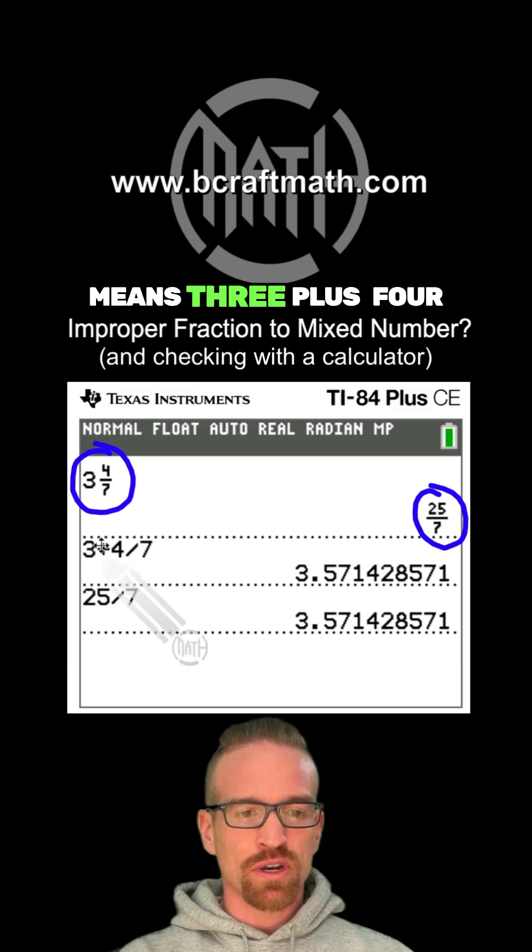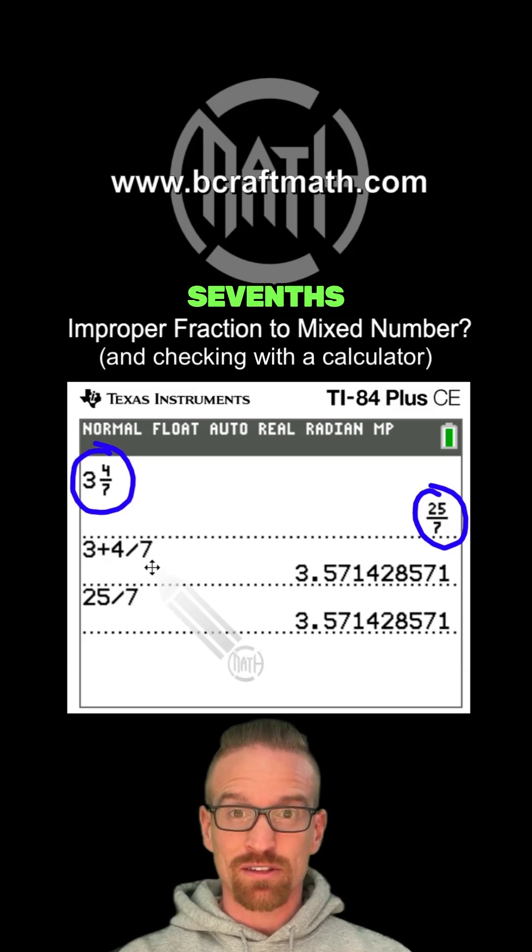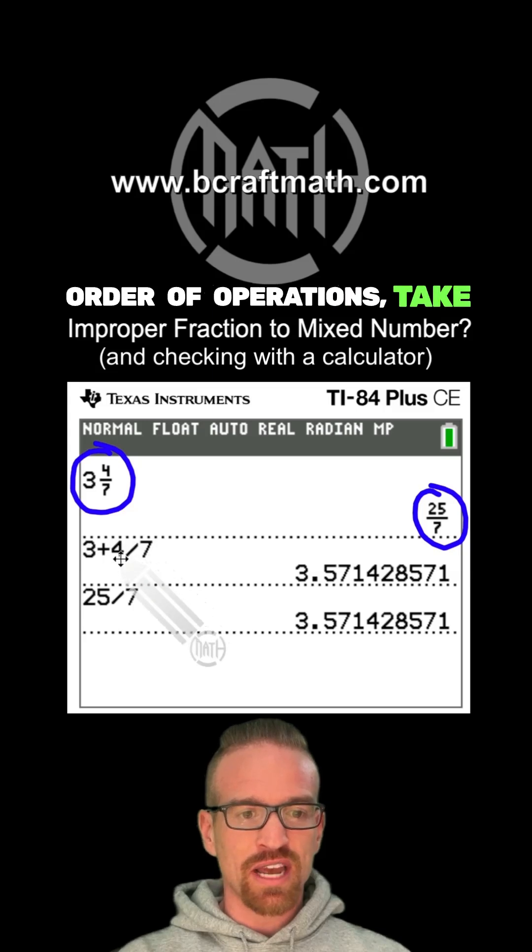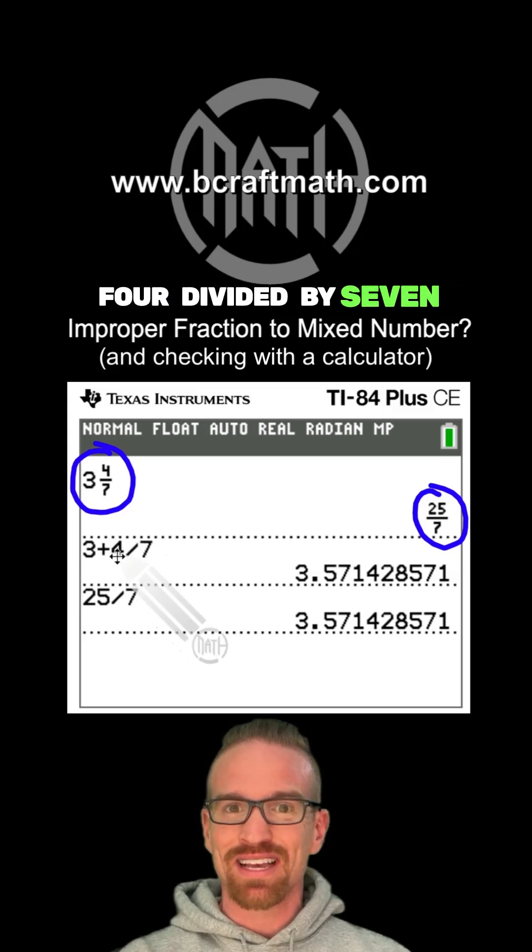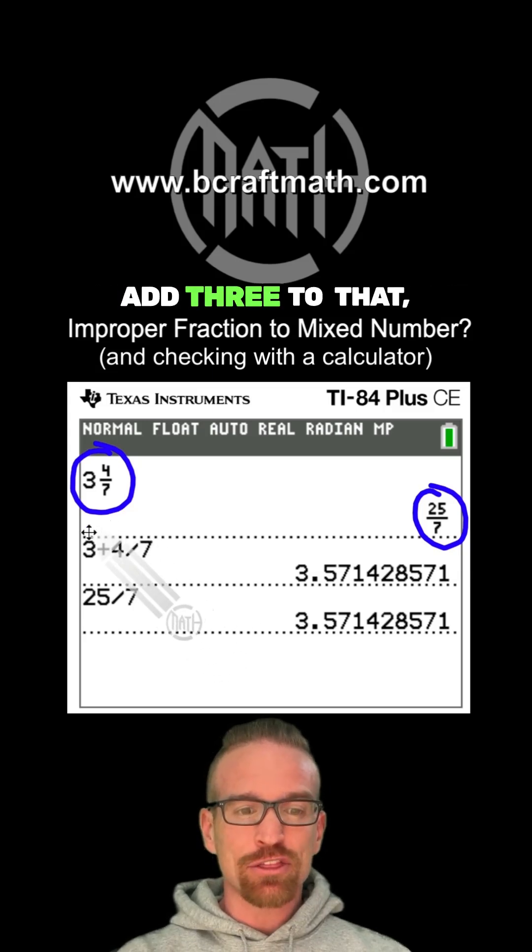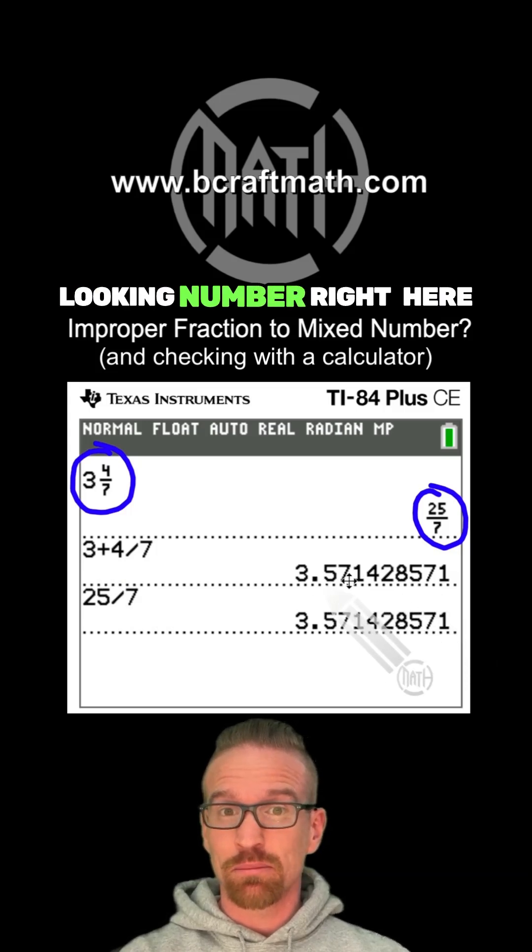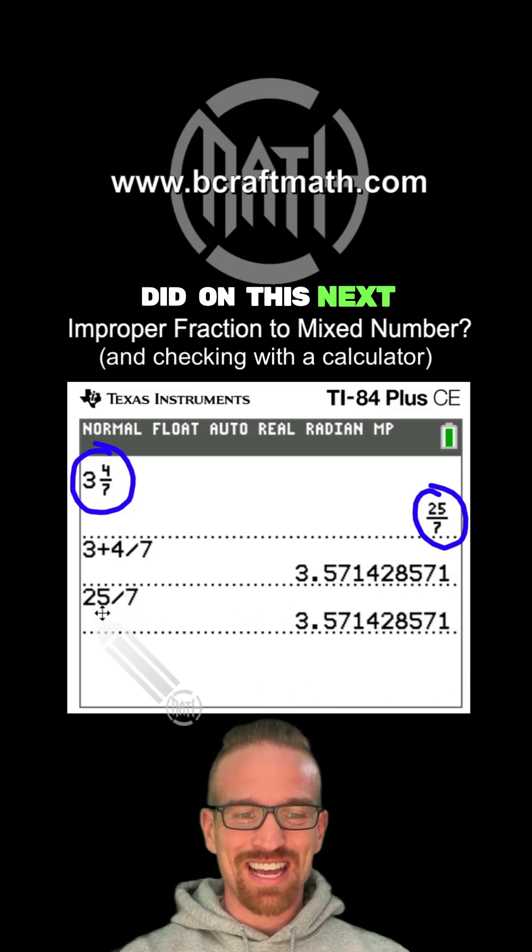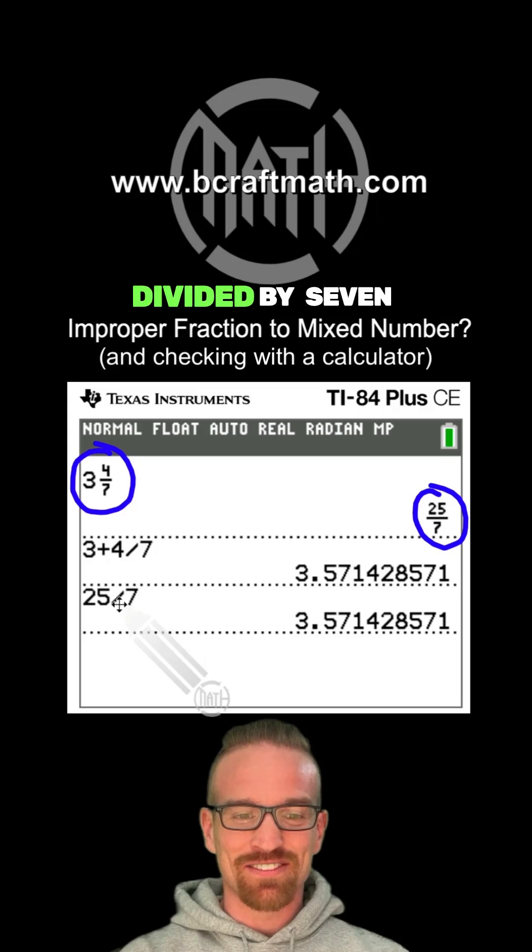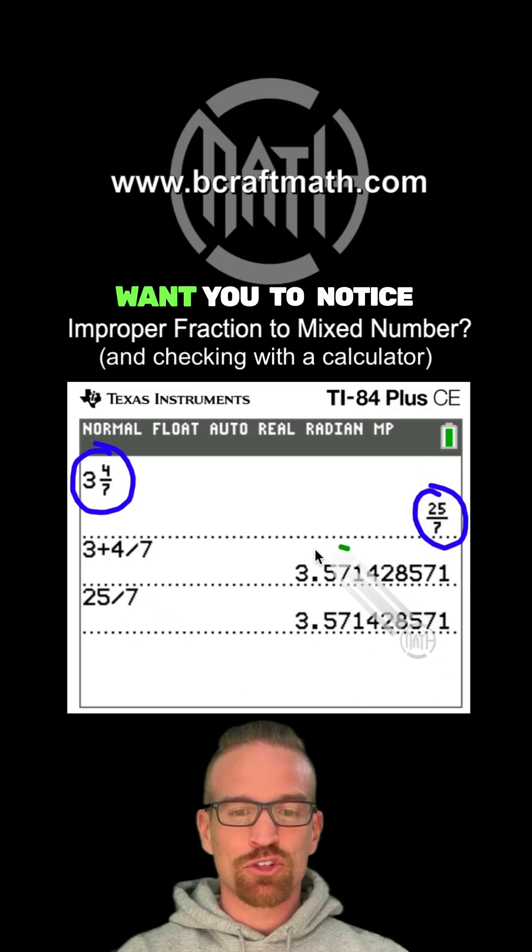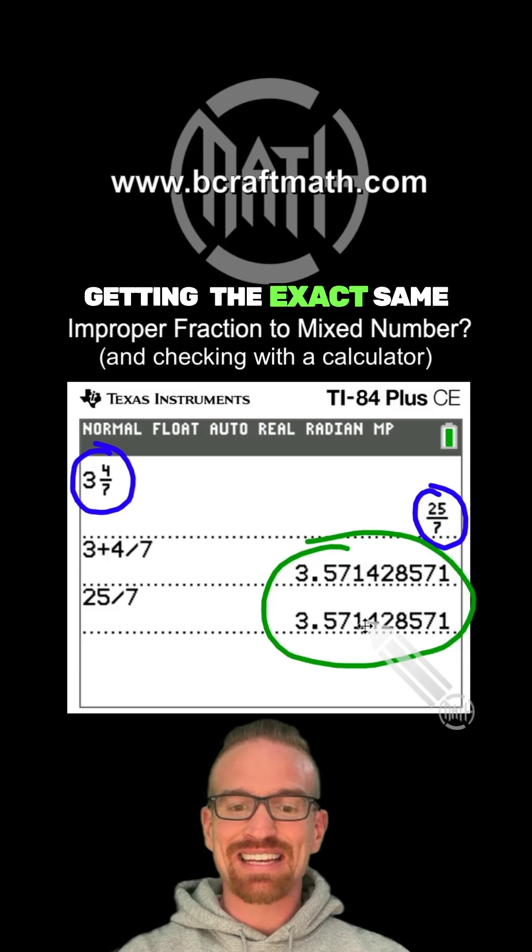3 and 4 sevenths means 3 plus 4 sevenths. Grab your calculator, do order of operations, take 4 divided by 7 first, add 3 to that, and I guarantee you, you'll get this funky looking number right here. Well, notice what I did on this next piece here. 25 divided by 7. That is our improper fraction. And what I really want you to notice here is that we're getting the exact same decimal.